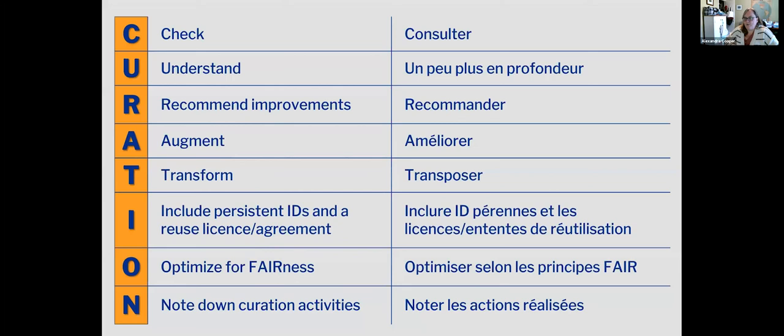This slide shows the backbone of the new curation model for our guide, with English on the left and its counterpart French on the right. The table may look familiar if you've used the DCN's CURATE framework - our curation model takes its inspiration from CURATE. The shift from CURATE to CURATION is first and foremost a means to provide the same curatorial guidance in both English and French. Our letters are mostly the same but some changes were required for it to work in both languages - for example the I for include and the O for optimize for fairness.